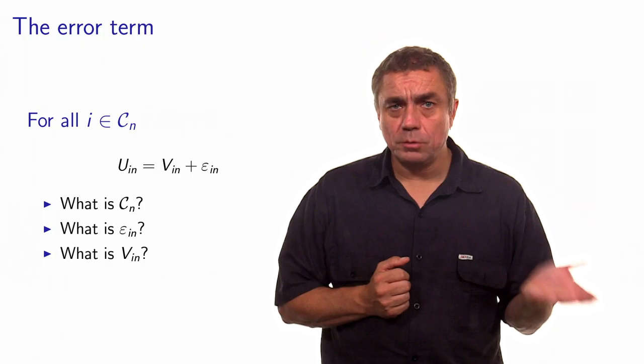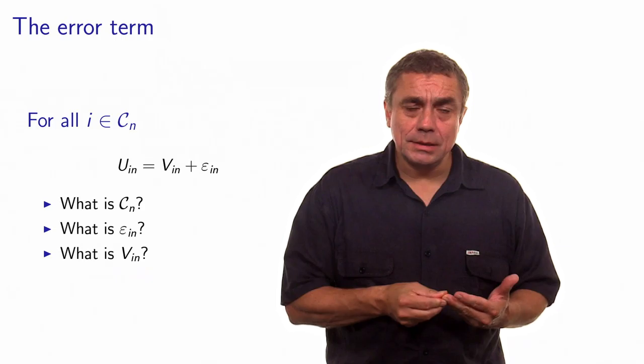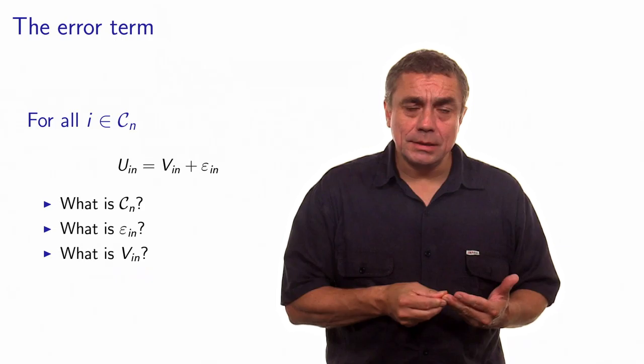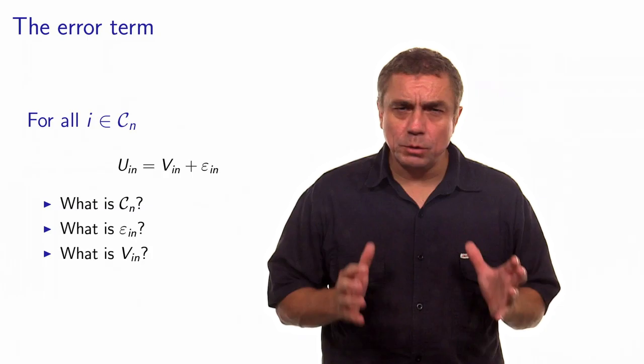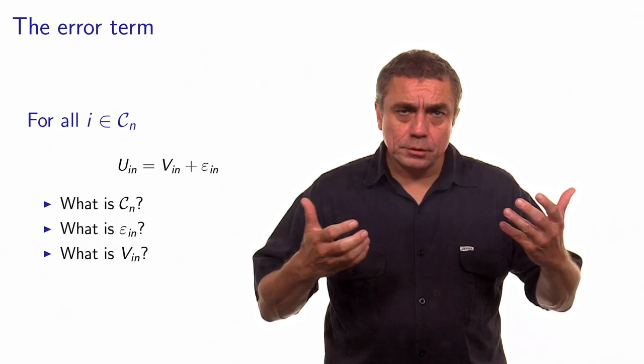The first ingredient is the choice set, which we denote by Cn. The second ingredient is the epsilon_in, the error term. And the third is the V_in, the deterministic part of the utility function. This week, we will spend most of the time on V_in — how to specify the deterministic part — as this is where the modeling is the most involved. But let's first look at the choice set, Cn, which will be the topic of this video.